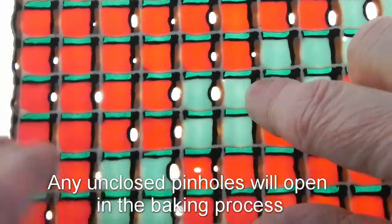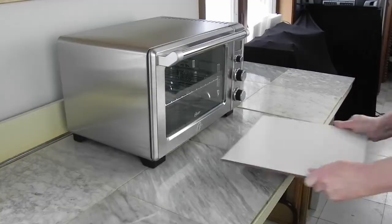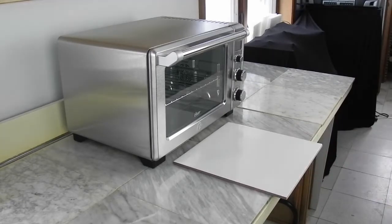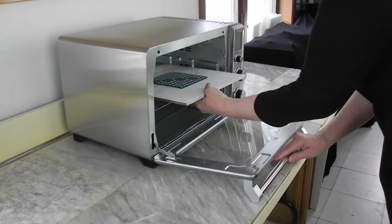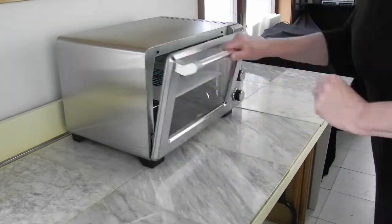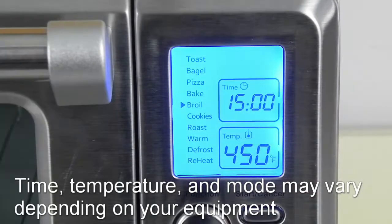This time I will put it on broil since I want to melt the top faster than the bottom. And again you will have to experiment with times and temps. It's like baking cookies, you have to know your oven.